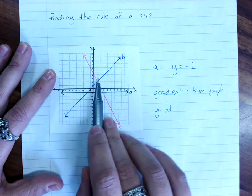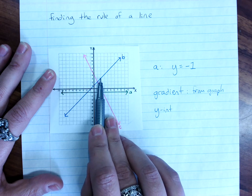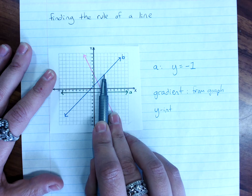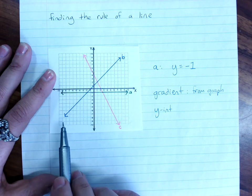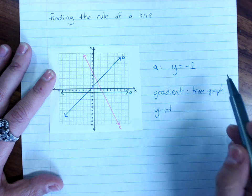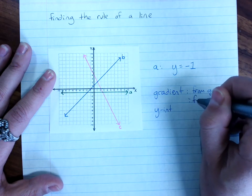So the gradient of B, as x goes across 1, y goes up 1. As x goes across 1, y goes up 1. So that's a gradient of 1 because y goes up 1 for every x1. We try to make x1. We can get the gradient from the graph, or we can also get it from the table.